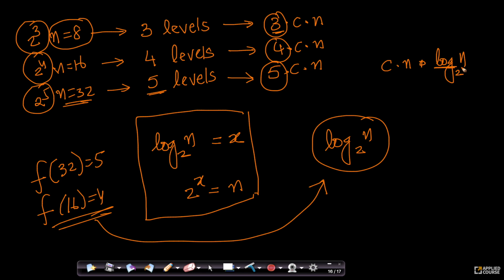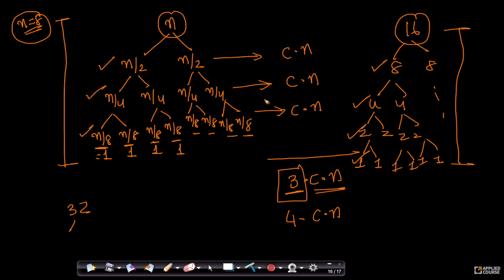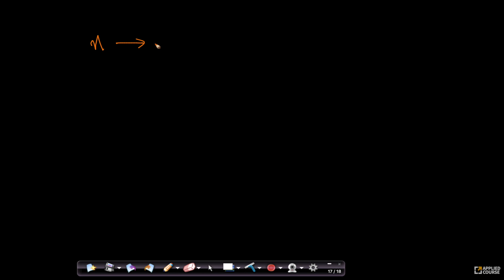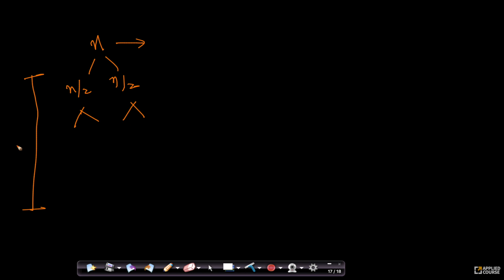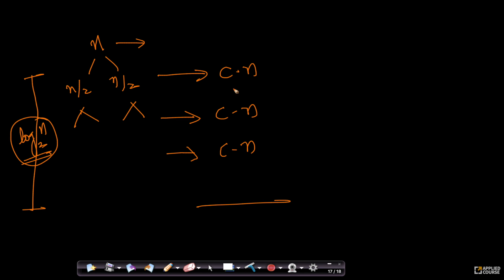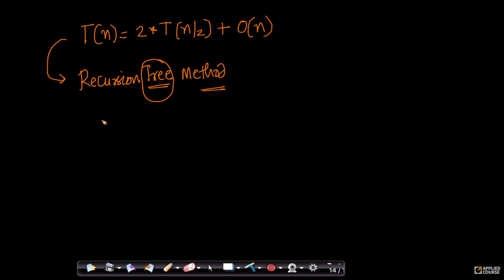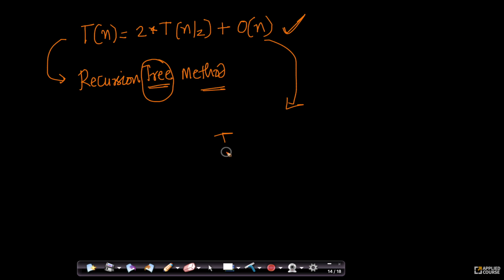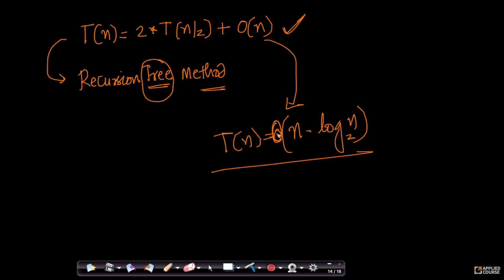So for an array of size n, you break it down log n levels deep, and at every level you have c·n work. The total is c·n·log n. Solving this recurrence relation gives T(n) = O(n log n base 2).